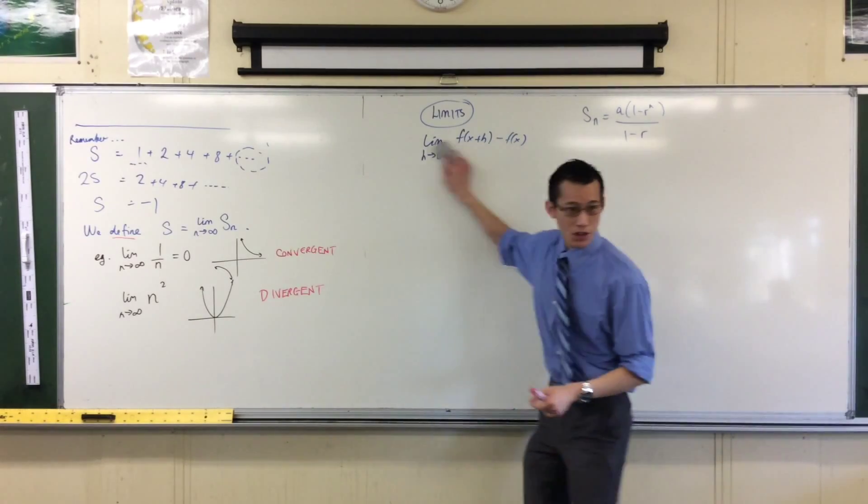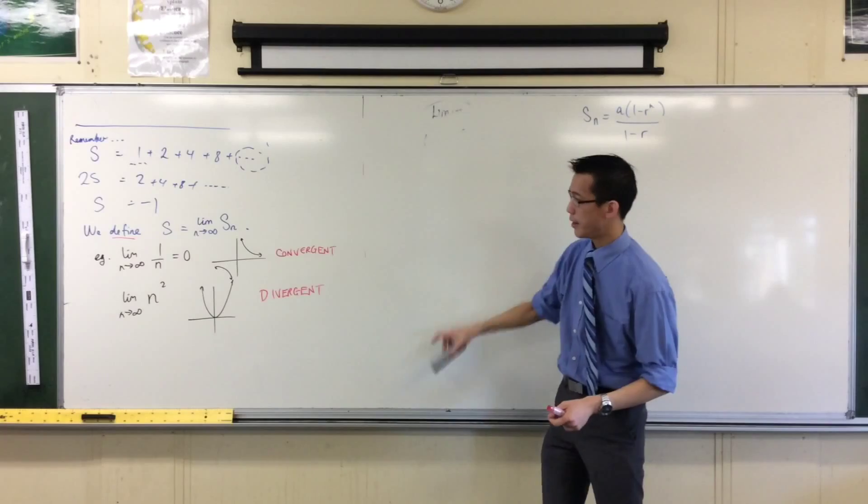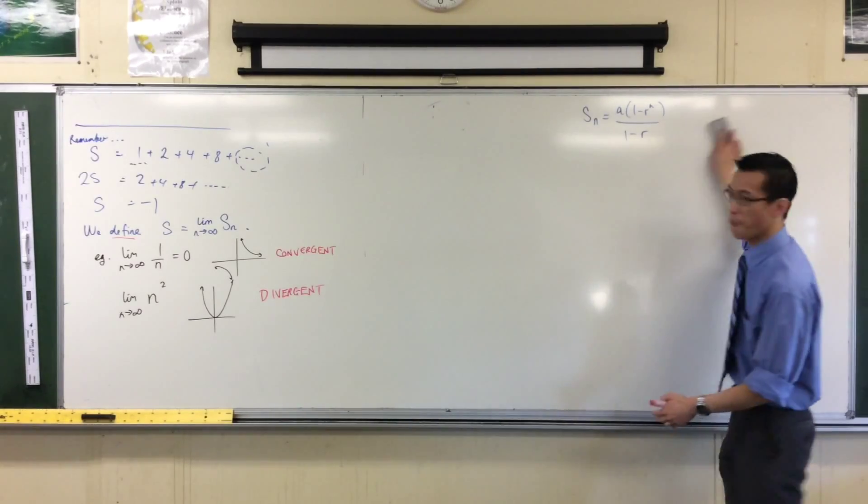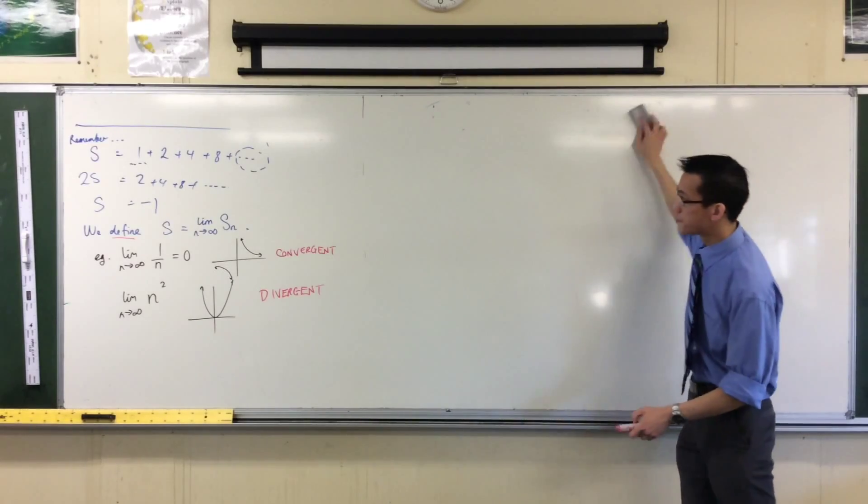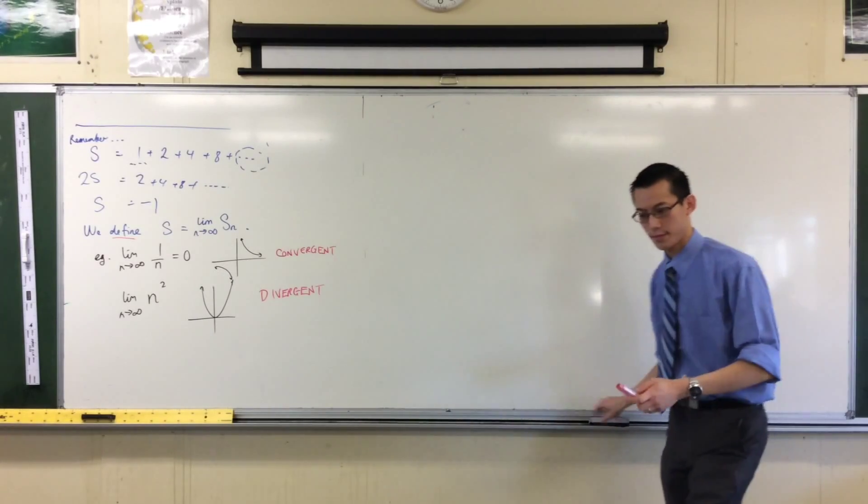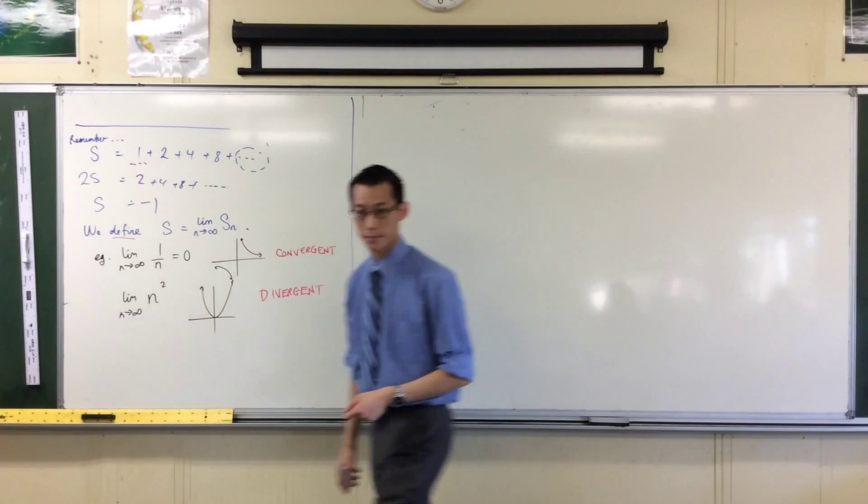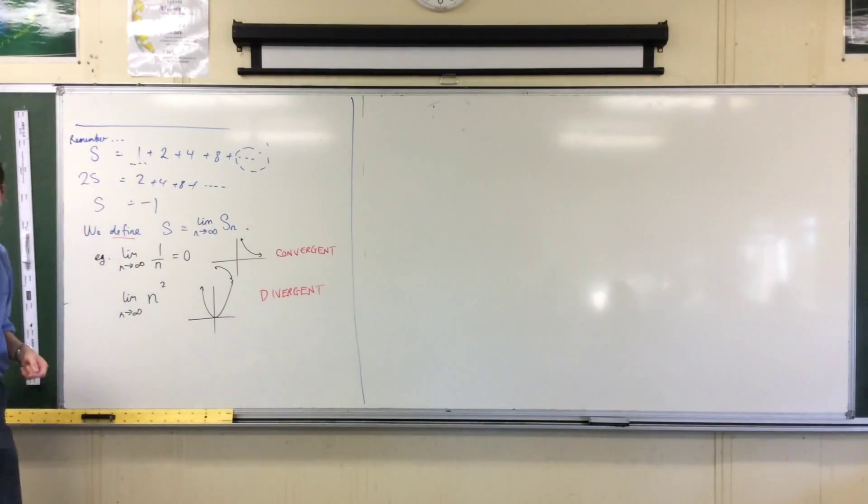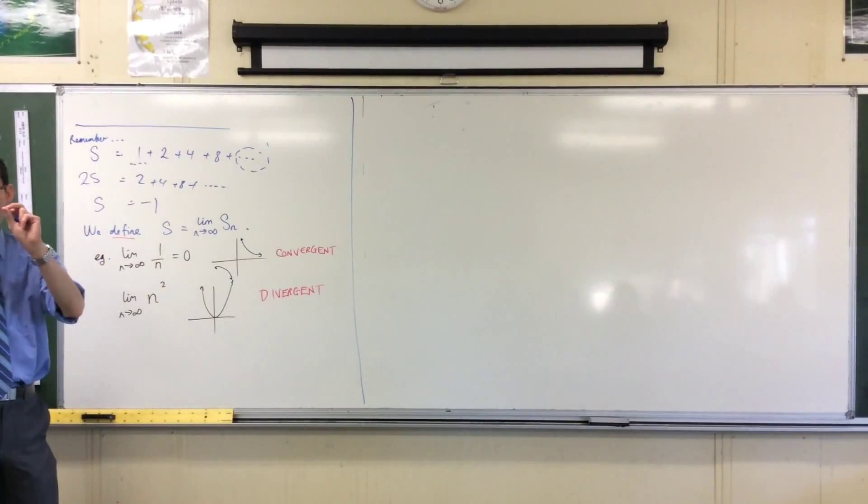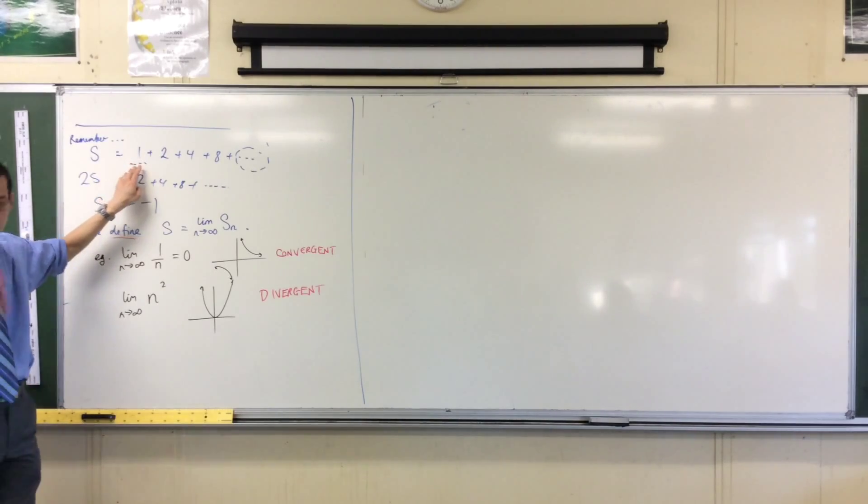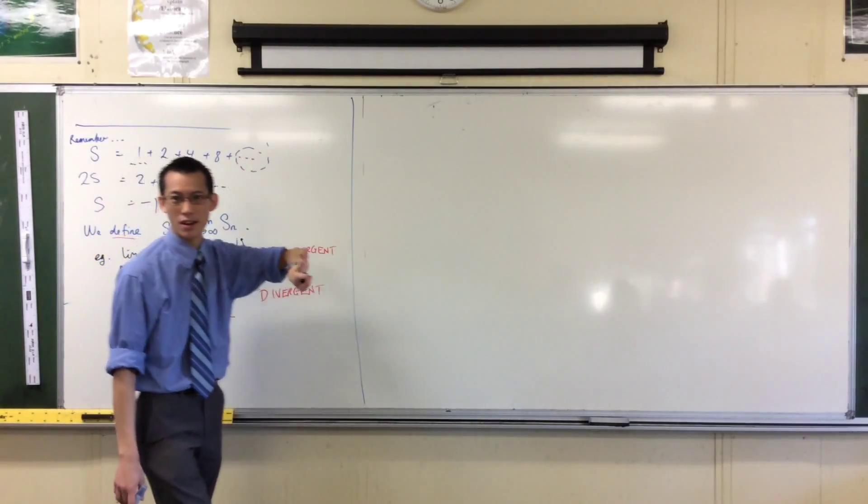We're going to call this guy here, where the limit goes toward an actual value, we're going to call this convergent. You know what converging is, right? It's when things go towards something inexorably, unstoppably. They're all approaching a certain thing. Whereas, something like this, well, what's the opposite of the word convergent? Divergent. Divergent.